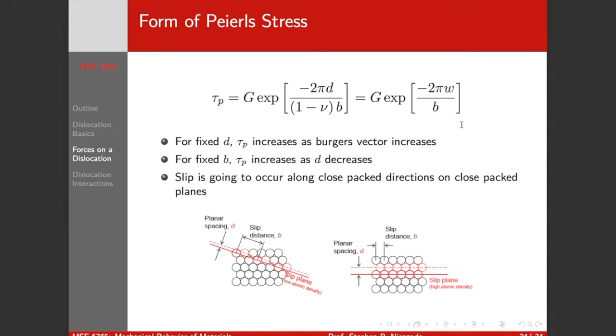So I'm not going to go through the derivation, but our Peierls stress is proportional to the shear modulus, and it's going to vary depending on what the slip plane is, what the Burgers vector is, and what the slip plane is. So if we consider d as our interplanar spacing, and our slip distance is the Burgers vector, for a fixed d spacing, our Peierls stress is going to increase as our Burgers vector increases.